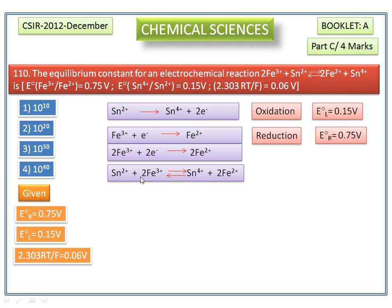In this equation, we can calculate the number of electrons involved in this electrochemical reaction. Here two electrons are involved, so n is equal to two. The cell potential in terms of the equilibrium constant: E° cell is equal to RT divided by nF ln K.